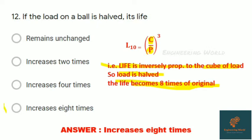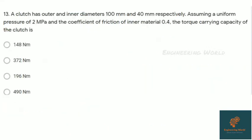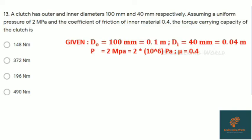Question thirteen: A clutch has outer and inner diameters 100 mm and 40 mm respectively, assuming uniform pressure of 2 MPa and coefficient of friction 0.4. Torque capacity is to be found. Given: outer diameter Do is 100 mm, that is 0.1 meter; inner diameter Di is 40 mm, that is 0.04 meter; pressure 2 MPa equals 2 × 10^6 Pa; μ is 0.4.